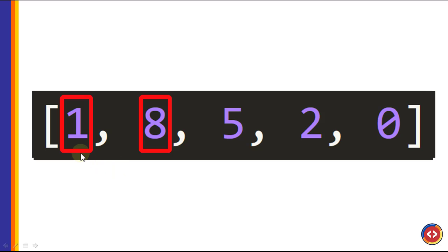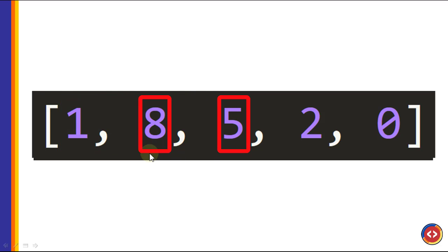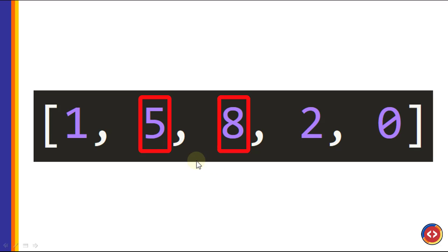First, it will take the first pair of elements, 1 and 8. These elements are already in order, so they will be kept intact. Then it will go to the second pair of numbers, 8 and 5. Are these elements in the correct order? They are not — 5 is less than 8.